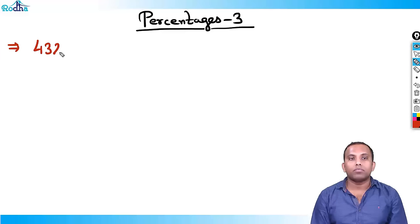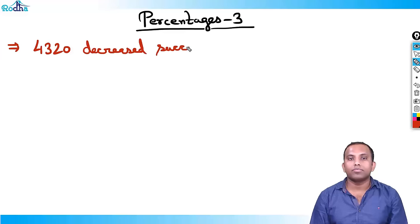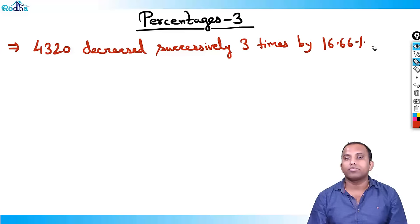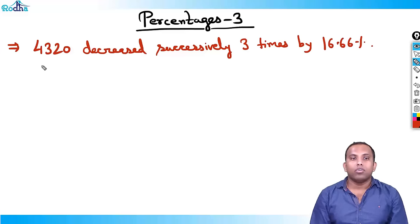4320 is a number, decreased successively three times by 16.66%. What is the resulting number?